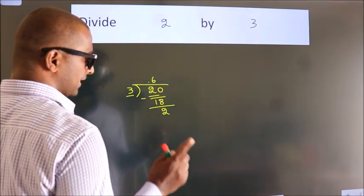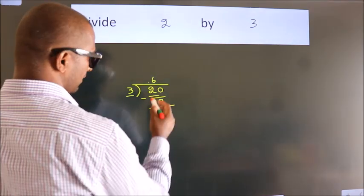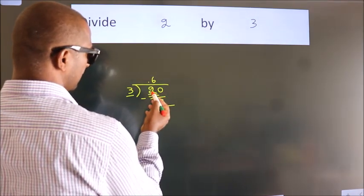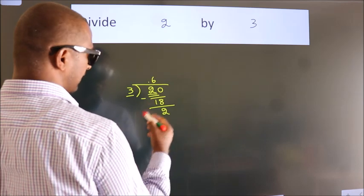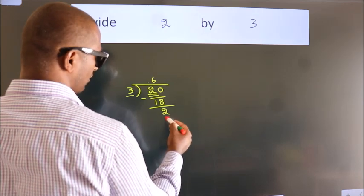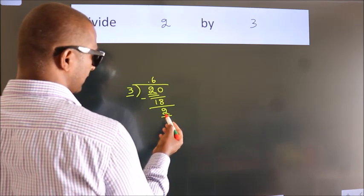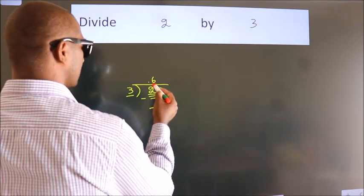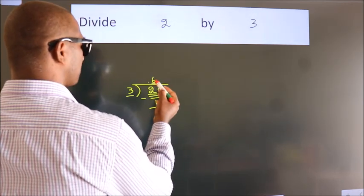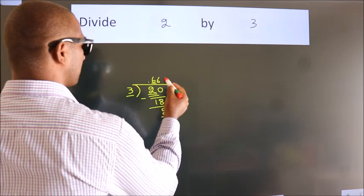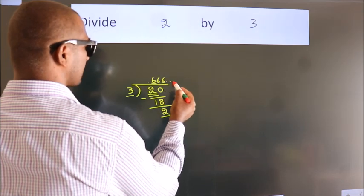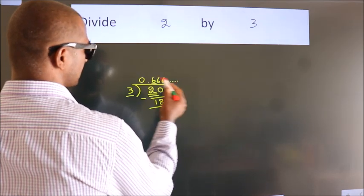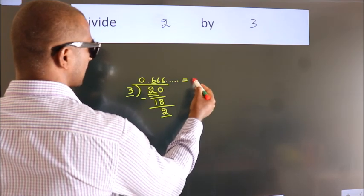Now observe: we had 2 here and we got 2 again. That means this number keeps on repeating. So this is our quotient.